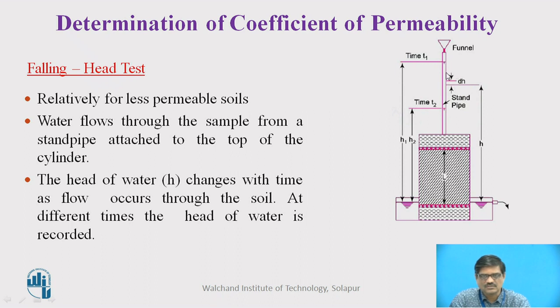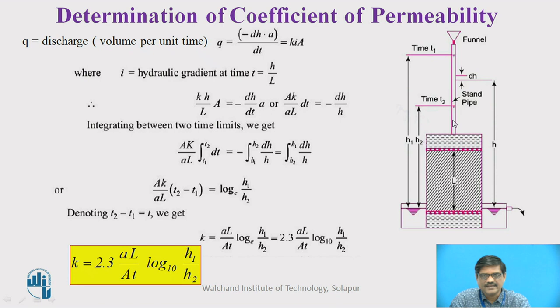The head of water changes with time as flow takes place. You see here, initially at time T1, we have a specific head H1. When we allow water to flow through the soil for a specific time interval, then at time T2, the head will be H2. So the head drops from H1 to H2 during the time T1 to T2. At different times, the head of water is recorded. Once we get this, we can find out the discharge through this particular soil.